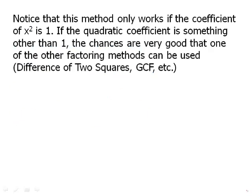Notice that this method only works if the coefficient of x² is 1. If the quadratic coefficient is something other than 1, chances are very good that one of the other factoring methods can be used. So, the difference of two squares or a greatest common factor may mean that we have to factor out a greatest common factor. Then we get an ordinary quadratic. So, we'll have to talk about combined factoring techniques if something like that comes into play.